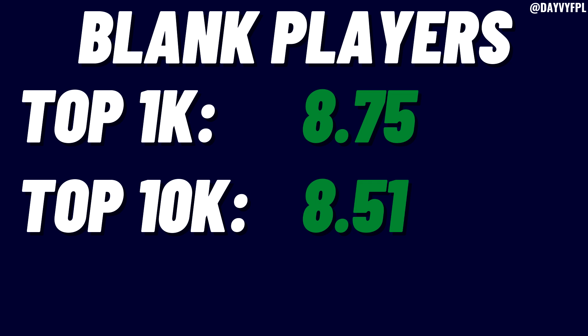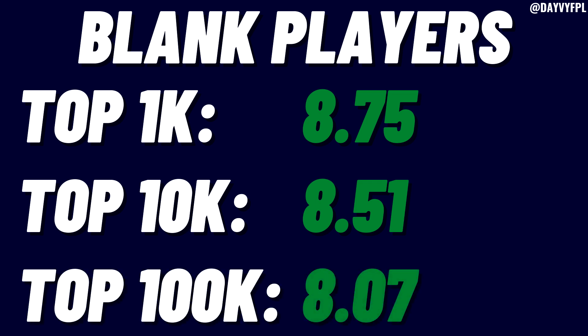The top 100k comes in at 8.07 — basically eight players. Eight players heading into blank game week 30 was my threshold; that's a good number to aim at. Anything more is a bonus, and if you have less, one free transfer plus one or two hits will get you there.